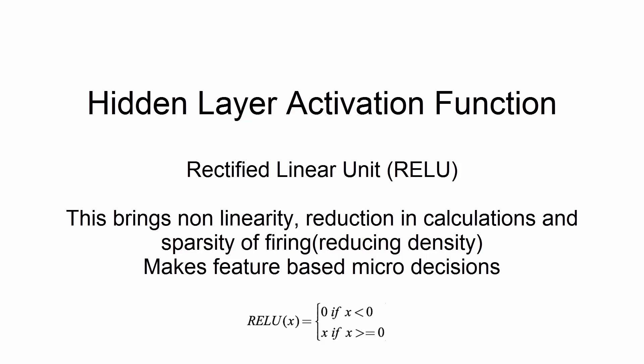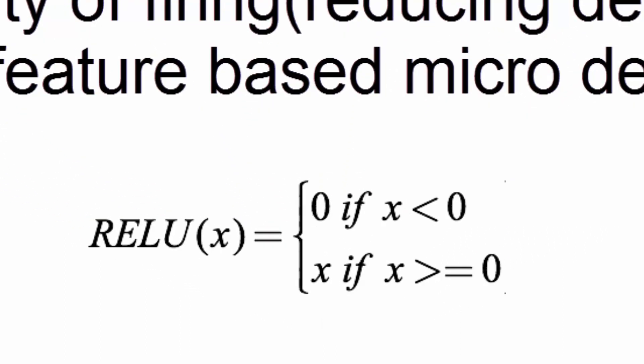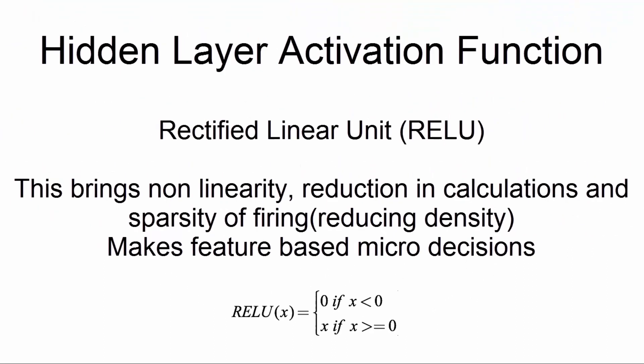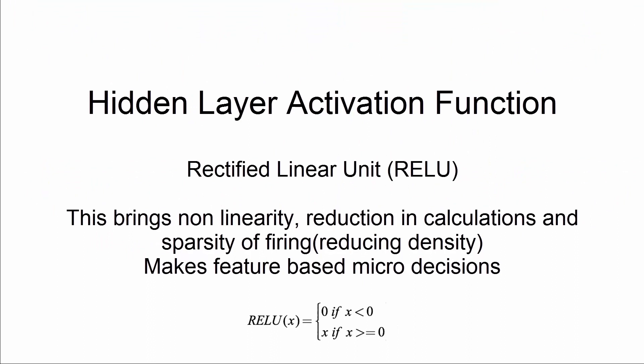The hidden layer functions are used to make micro decisions. This function's output is 0 if the input is less than 0 or any negative number, and it is what the input is if the input is greater than or equal to 0.